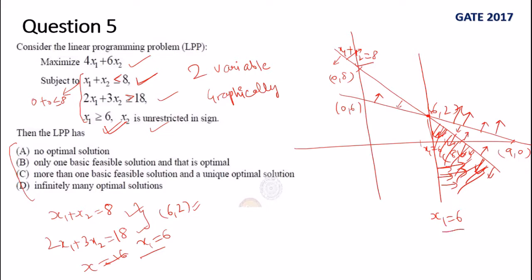But from the second line, the region is exactly on the opposite side, so no intersection I can see except this point which we marked was (6, 2).